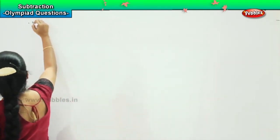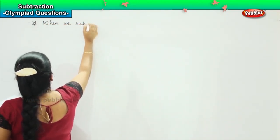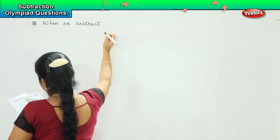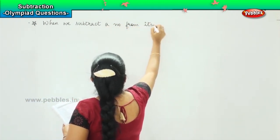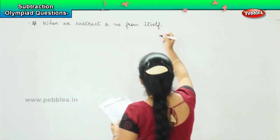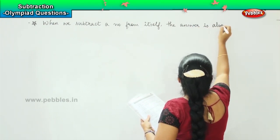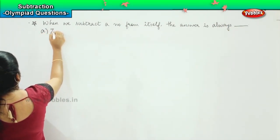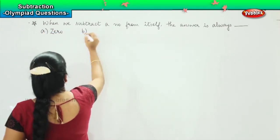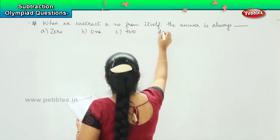Ready to solve the next sum? Okay. So here is your question. When we subtract a number from itself, the answer is always dash. The options are a) 0, option b) 1, option c) 2, and option d) itself.